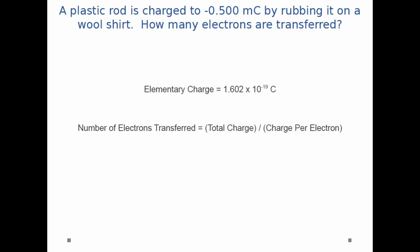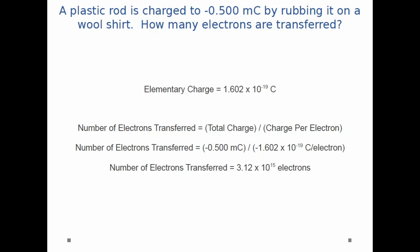If we want to find the number of electrons transferred, that'll just equal the total charge divided by the charge per electron. In this case it's minus 0.5 millicoulombs divided by minus 1.602 times 10 to the minus 19 coulombs per electron. And that gives us 3.12 times 10 to the 15 electrons.